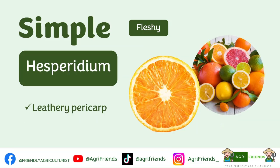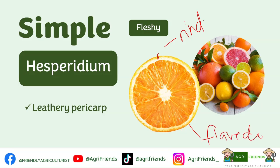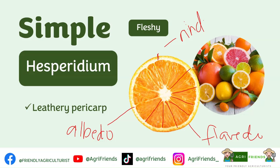Hesperidium is like a berry but with a leathery pericarp called the rind. The rind is further divided into the colored exocarp or flavedo, which contains volatile oil glands in pits, and the white mesocarp called the albedo. The endocarp is separated into sections, each section representing one carpel, and these are filled with pulp or fluid-like vesicles that are actually specialized trichomes. Examples of hesperidium are oranges and other citrus fruits.